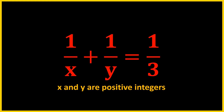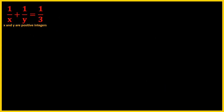The basic idea is to manipulate this equation and factor as much as we can. First, I'll get a common denominator on the left-hand side, giving (x plus y) over xy equals one-third. Multiplying both sides by 3xy, or cross-multiplying, we get xy equals 3x plus 3y.